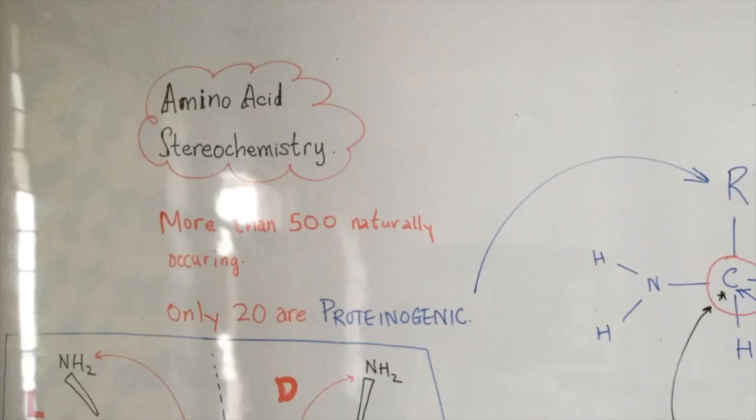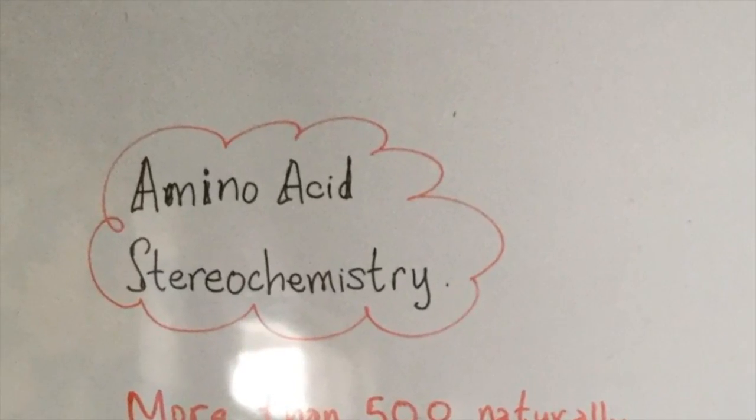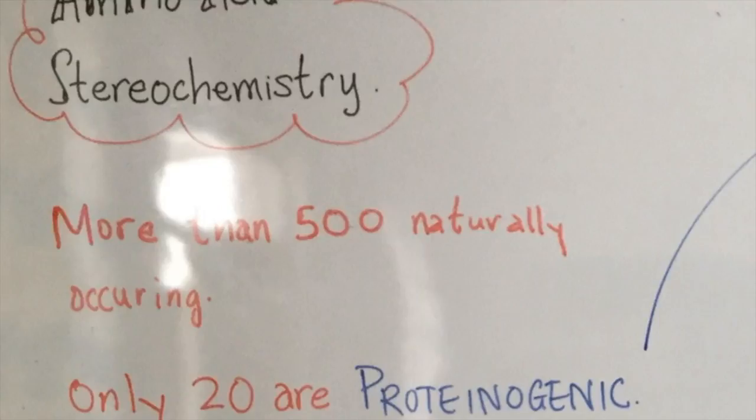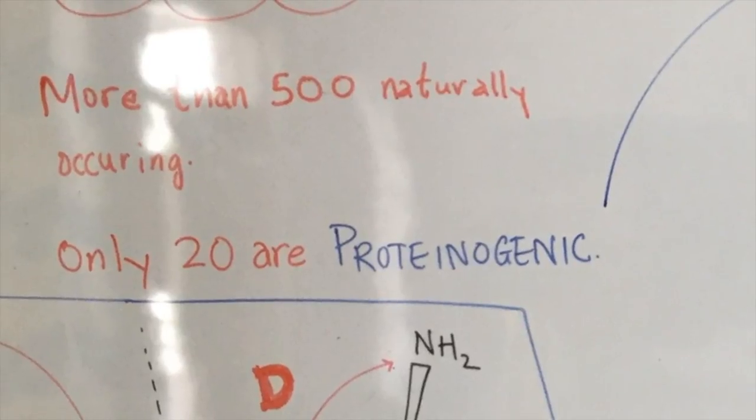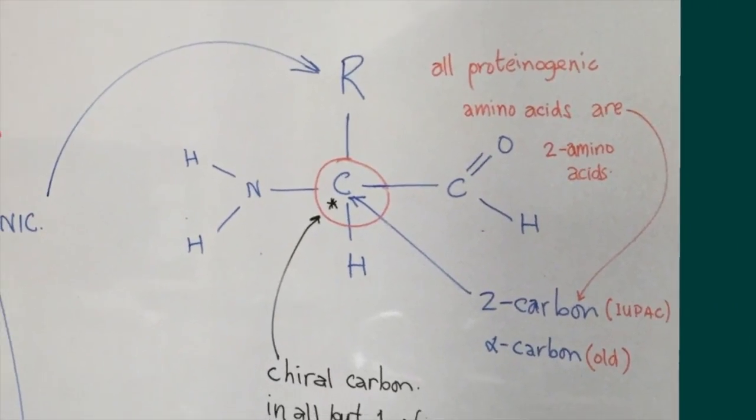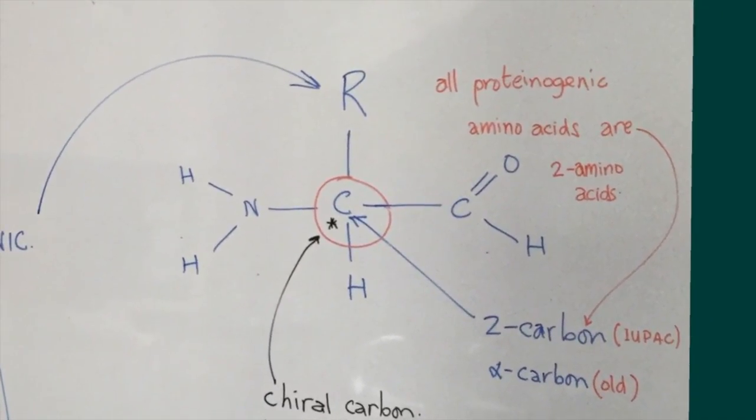Welcome again. Today we look at amino acid stereochemistry, noting that there are more than 500 naturally occurring amino acids, but of these 500, only 20 are proteinogenic, which means that only 20 amino acids are involved in building structures in living organisms.